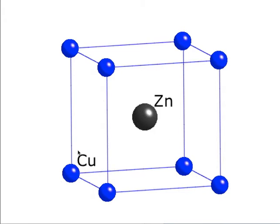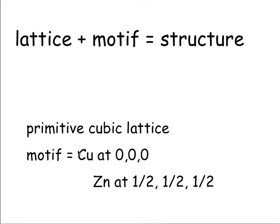In three dimensions that structure would look like this. But as I said yesterday, drawing three-dimensional diagrams will become more and more complicated as the course proceeds, so it is best to look at projections. We produce a structure by combining a lattice with a motif - in this case a copper atom at 0,0,0 and a zinc atom at 1/2,1/2,1/2.